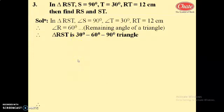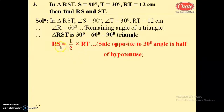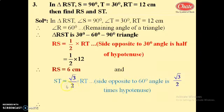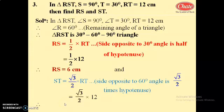Triangle RST is a 30-60-90 degree triangle. The side opposite to 30 degrees is half of the hypotenuse, so RS equals half of RT. Therefore RS equals half of 12, which is 6 centimeters. The side opposite to 60 degrees, ST, is root 3 by 2 times the hypotenuse RT. So ST equals root 3 by 2 into 12, which gives ST equals 6 root 3 centimeters.